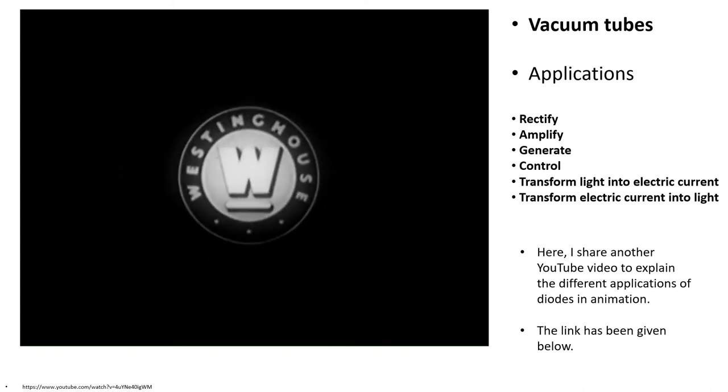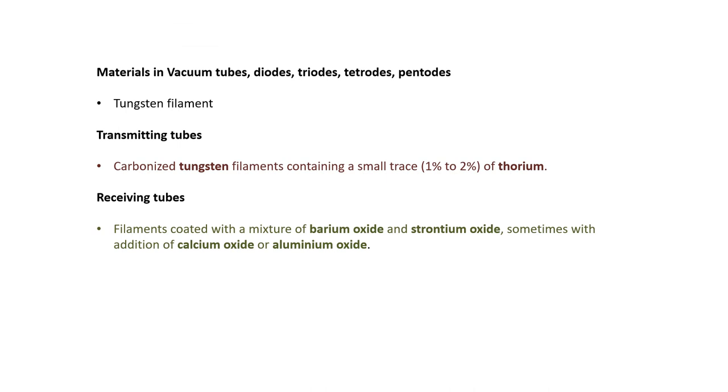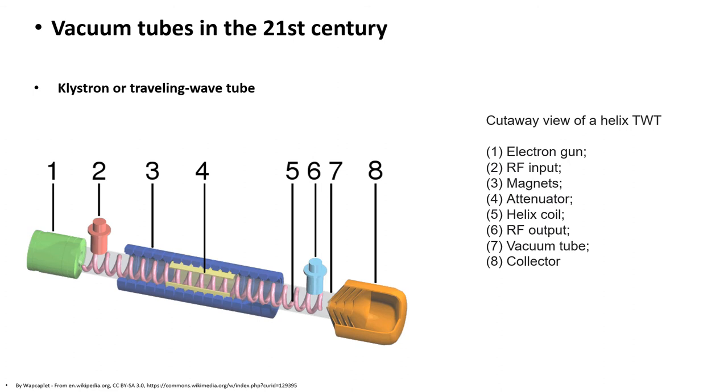The core material used in vacuum tubes—diodes, triodes, tetrodes, pentodes, and so forth—is tungsten filament. In transmitting tubes, carbonized tungsten filaments containing a small trace of 1-2% thorium is employed. In receiving tubes, filaments coated with a mixture of barium oxide and strontium oxide, sometimes with addition of calcium oxide or aluminum oxide, is employed. Now we shall see some specific vacuum tubes popular in the 21st century. However, most vacuum tubes have been replaced by transistors or integrated circuits, but few are still in use.